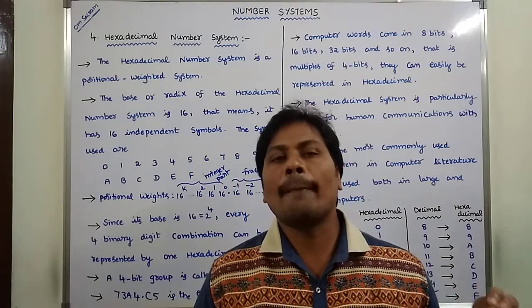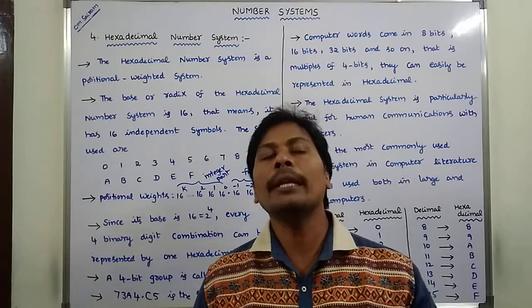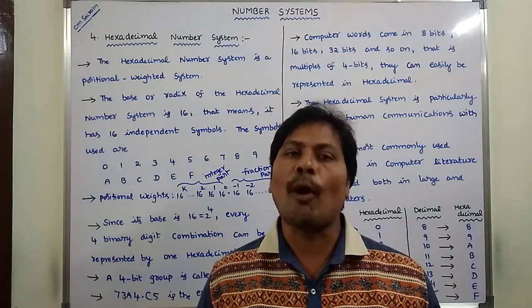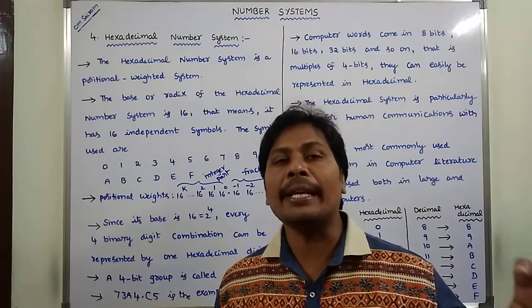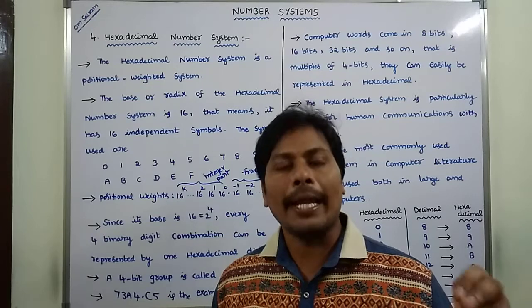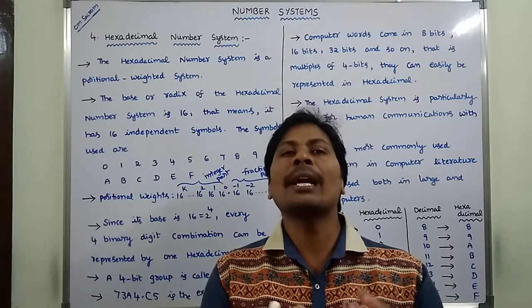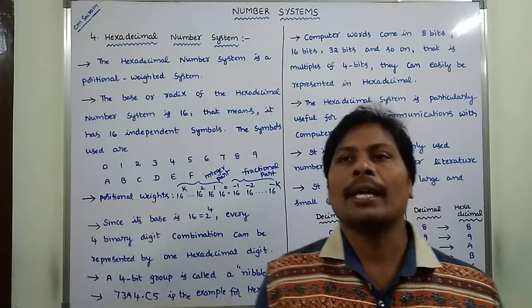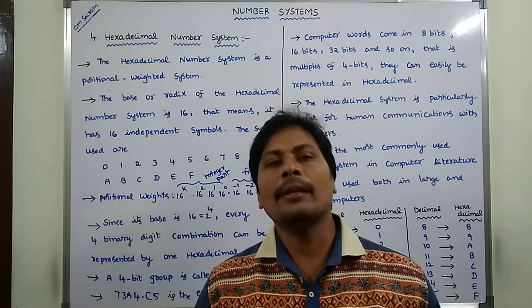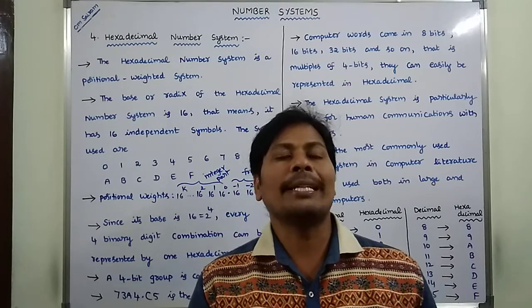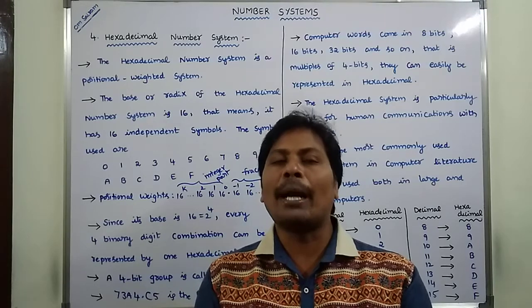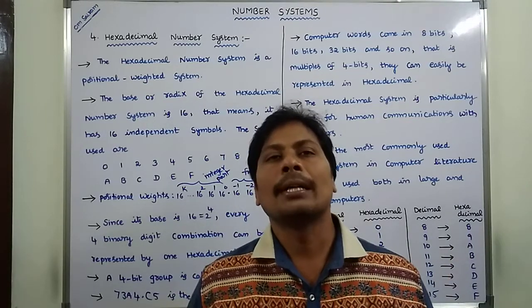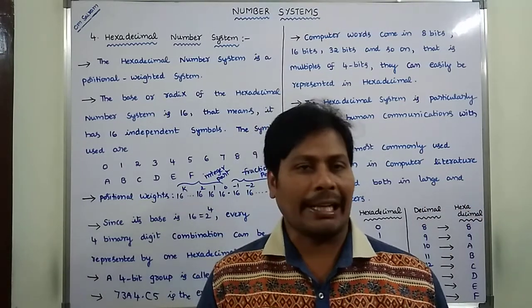Hexadecimal number system is the most widely used number system in computer literature. It can be used in both large and small computers, and is mainly used for human interactions with computer systems — that means human communications with computers. Generally, the computer word comes in 4 bits, 8 bits, 16 bits, 32 bits, and 64 bits, in terms of multiples of 4 bits. Because of that reason, hexadecimal number system is mainly used in computer literature.